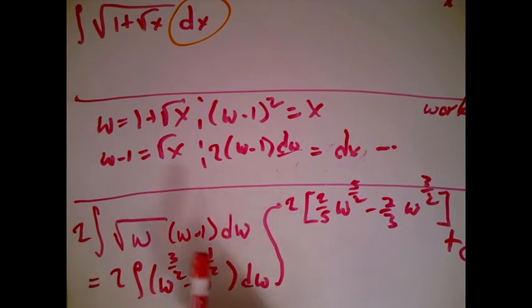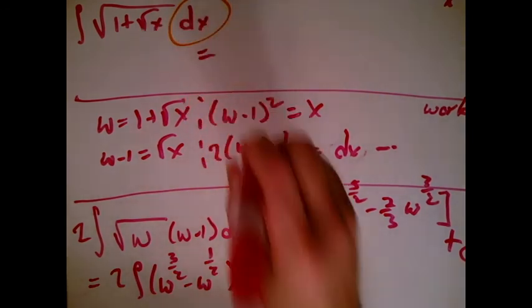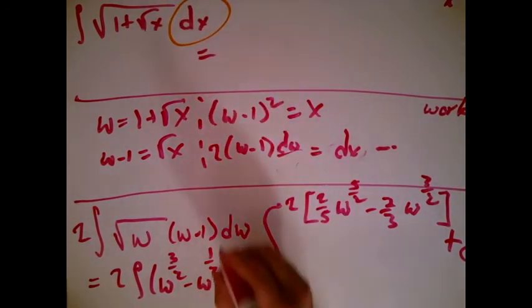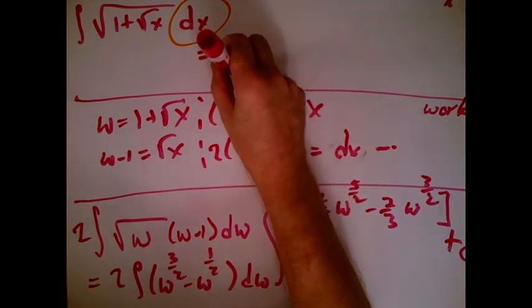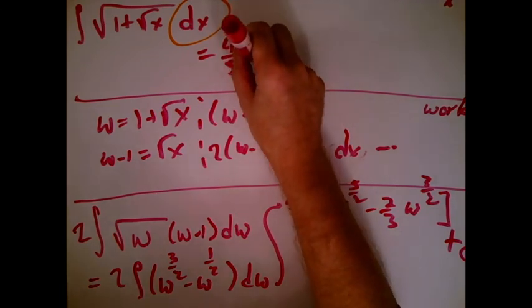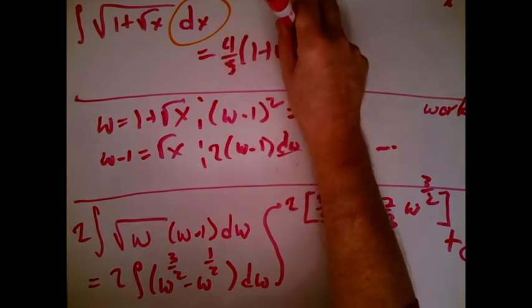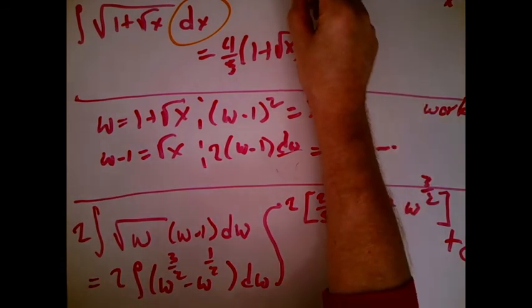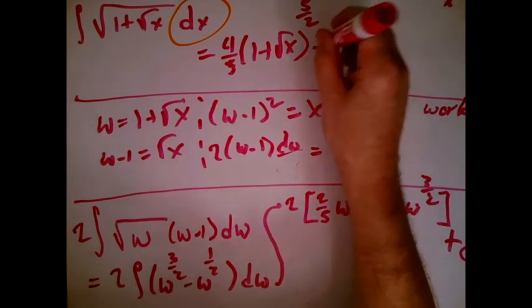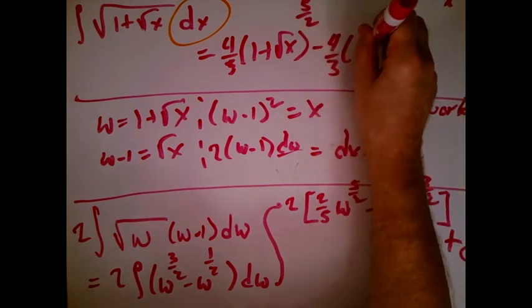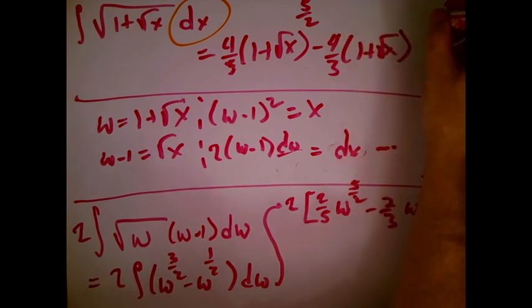We have an answer, but our answer is w's, and the original thing said find all functions whose derivative has x's in them. So what I would need to do is walk back through the work land that turns w's into x's, and just write the whole thing out. So what I'm going to write out is 4 fifths times w, that's 1 plus square root x to the 5 halves, like that, and then minus 4 thirds, like that. I want 1 plus square root x to the 3 halves, plus c.